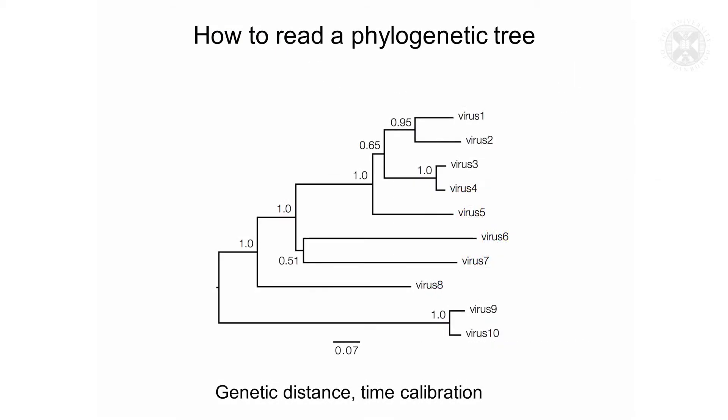This is a phylogenetic tree based on those viruses, the sequence alignment that we saw in the last slide. So what can we get from the phylogenetic tree?